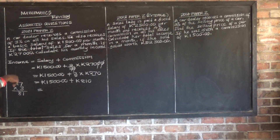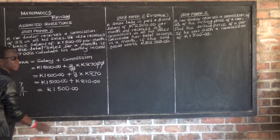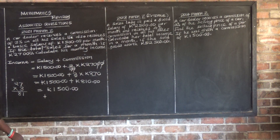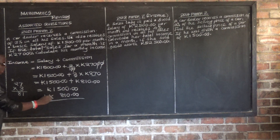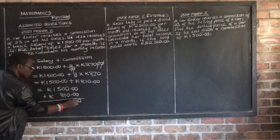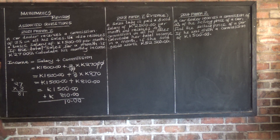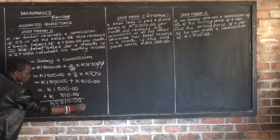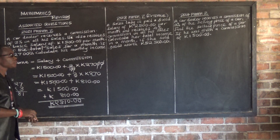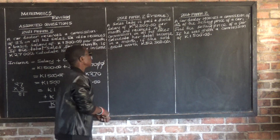So the total income equals salary plus commission: $1,500 plus $810 equals $2,310. That is the monthly income for the car dealer.